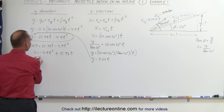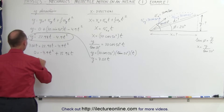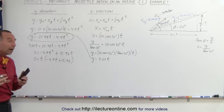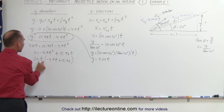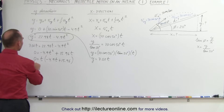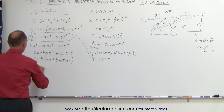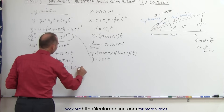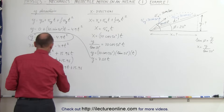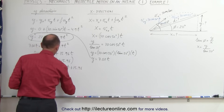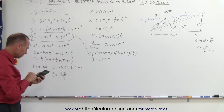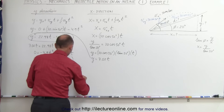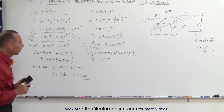Factoring out t: 0 equals t times (minus 4.9t plus 15.96). For this product to equal zero, either t equals 0 or the parenthetical term equals zero. Setting minus 4.9t plus 15.96 equal to zero and solving for t gives t equals 15.96 divided by 4.9, which equals 3.257 seconds — keeping an extra decimal place to minimize rounding errors.